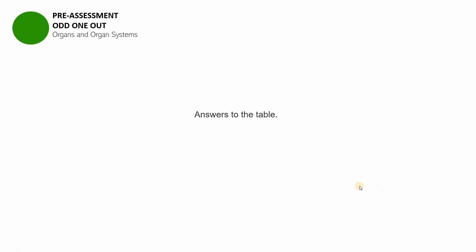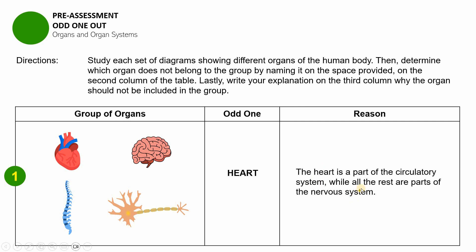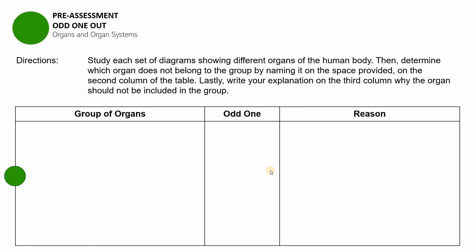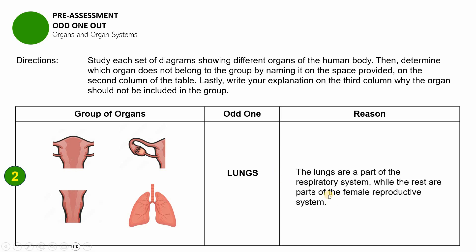These are the answers to the table. For the first group of organs, the odd one is the heart. The reason is that the heart is a part of the circulatory system, while the brain, the spinal cord, and the neuron are all parts of the nervous system. For the next item, the odd one is the lungs. The reason is that the lungs are part of the respiratory system, while the uterus, ovaries, fallopian tube, vagina, and cervix are all parts of the female reproductive system.